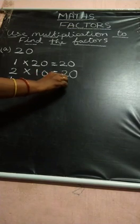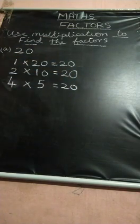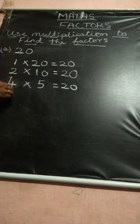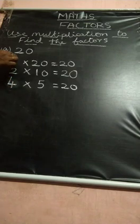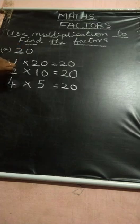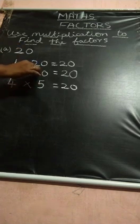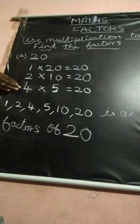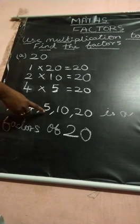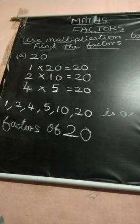4, 5s are 20. After 4, what will come? 5. But 5 already came before, so you stop. Now write the factors starting from 1: 1, 2, 4, 5, 10, 20 are the factors of 20. So 1, 2, 4, 5, 10, 20 are the factors of 20. All of them understood, children?